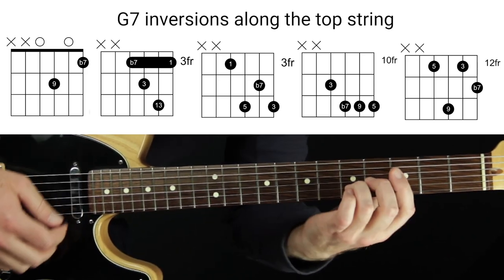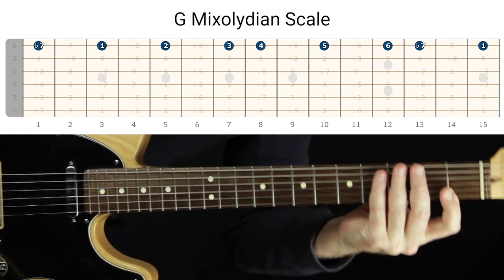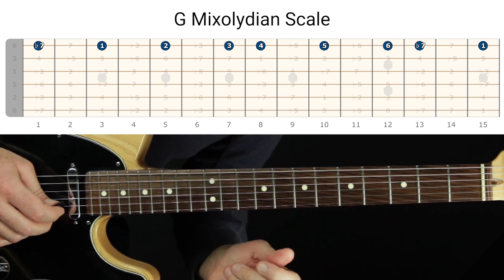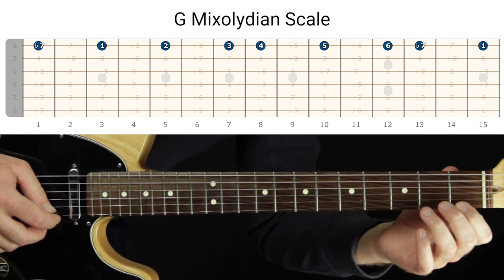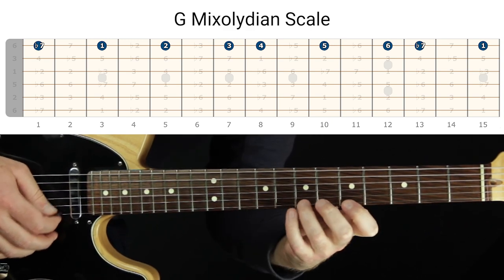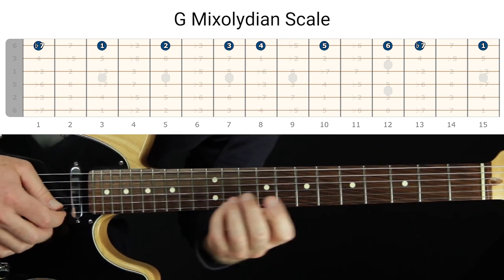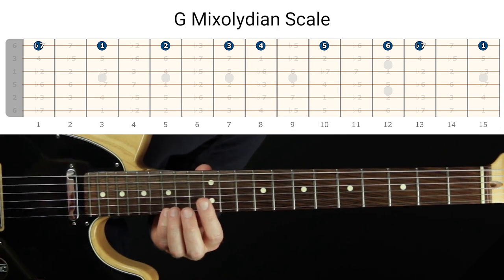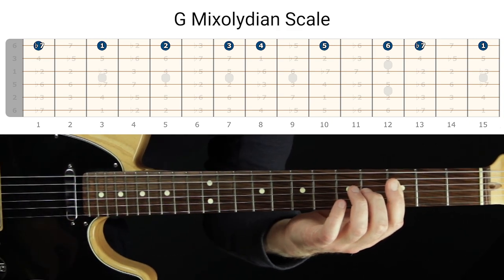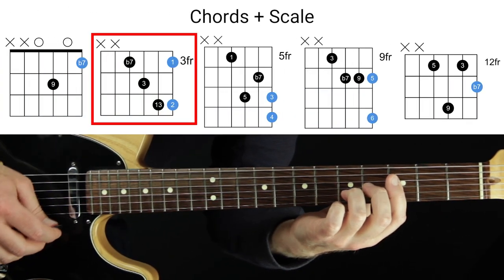After that, we're going to map out the scale notes around the chord shapes — this is step five. In the last chord we jumped right into adding scale notes around the chords, but step five can be mapping out the scale itself first. So: root, flat seven, two, three, four, five, six, flat seven, root. And then after that, adding the chord tones around it — whatever you need to do, take your time.